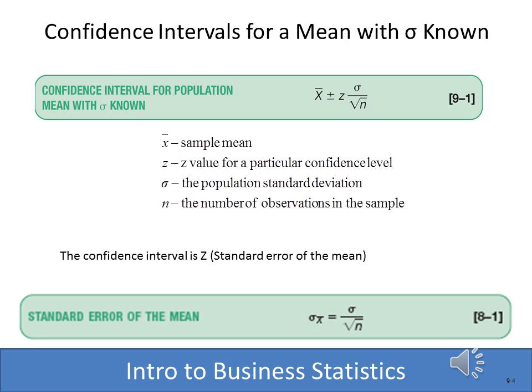For this formula to work, note that it applies when the standard deviation is known. So if we know the standard deviation of the population, this is the formula we use. The z-score we use is the z-score for the desired level of confidence, and we'll look that up based on the percentage of confidence we want, as shown in the next slide.